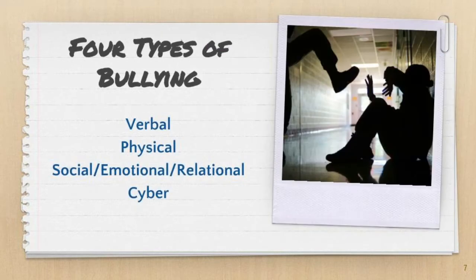There are four types of bullying behavior: verbal, physical, cyber, and depending on what literature you are looking at, the last one is social, emotional, or relational. We will describe these more in depth in the next few slides.